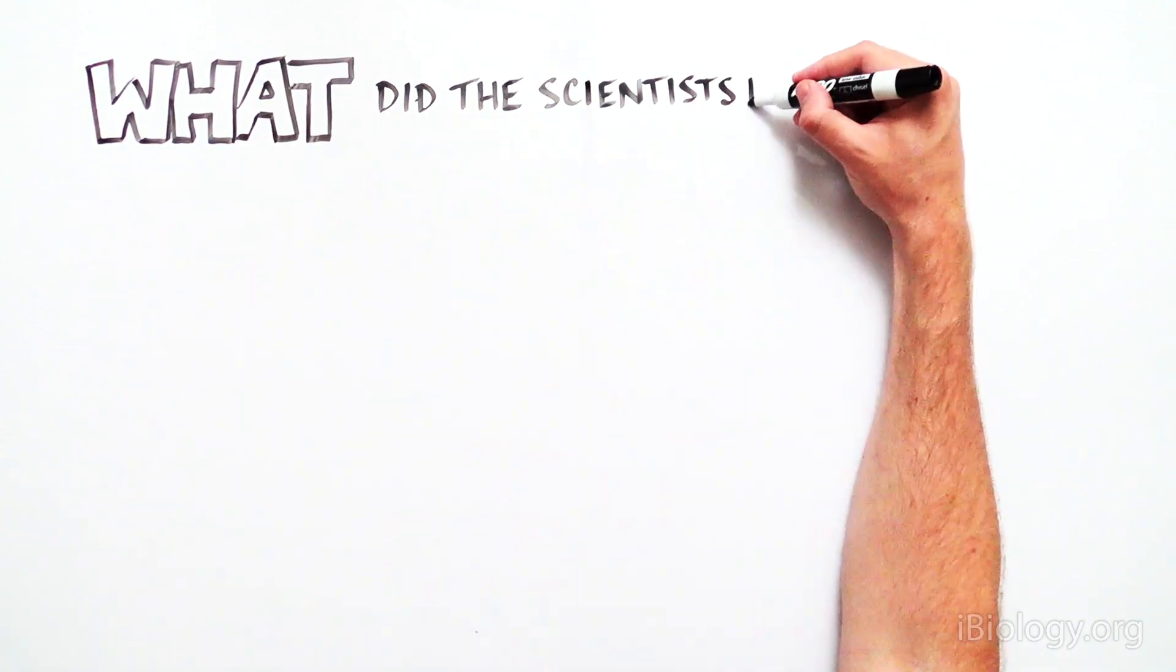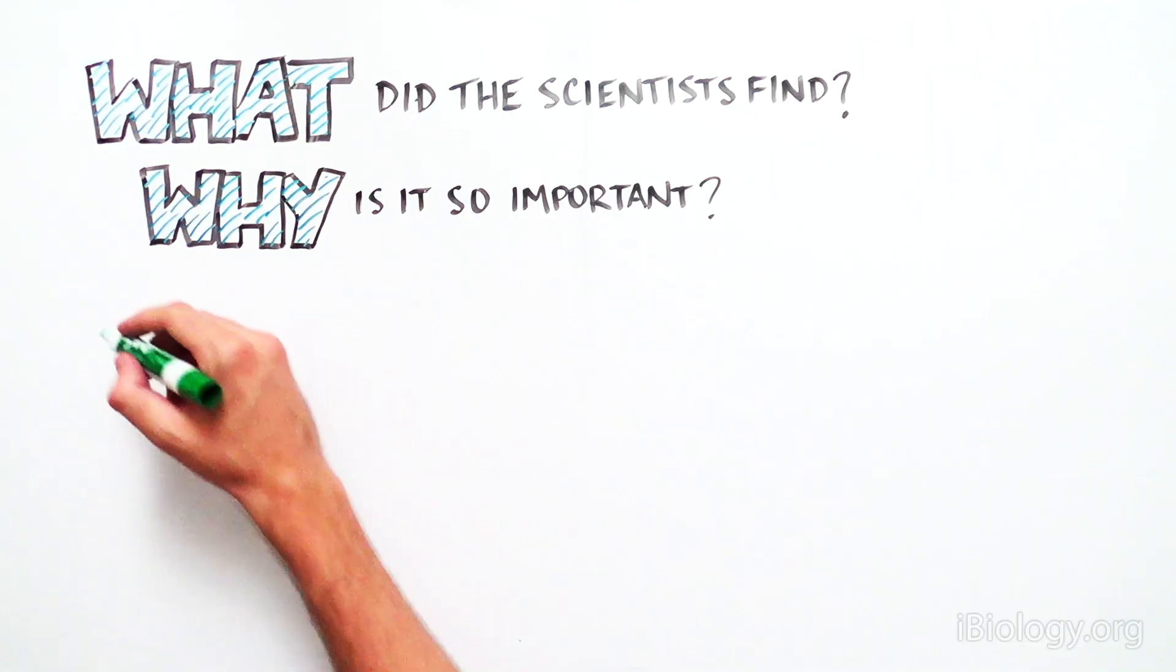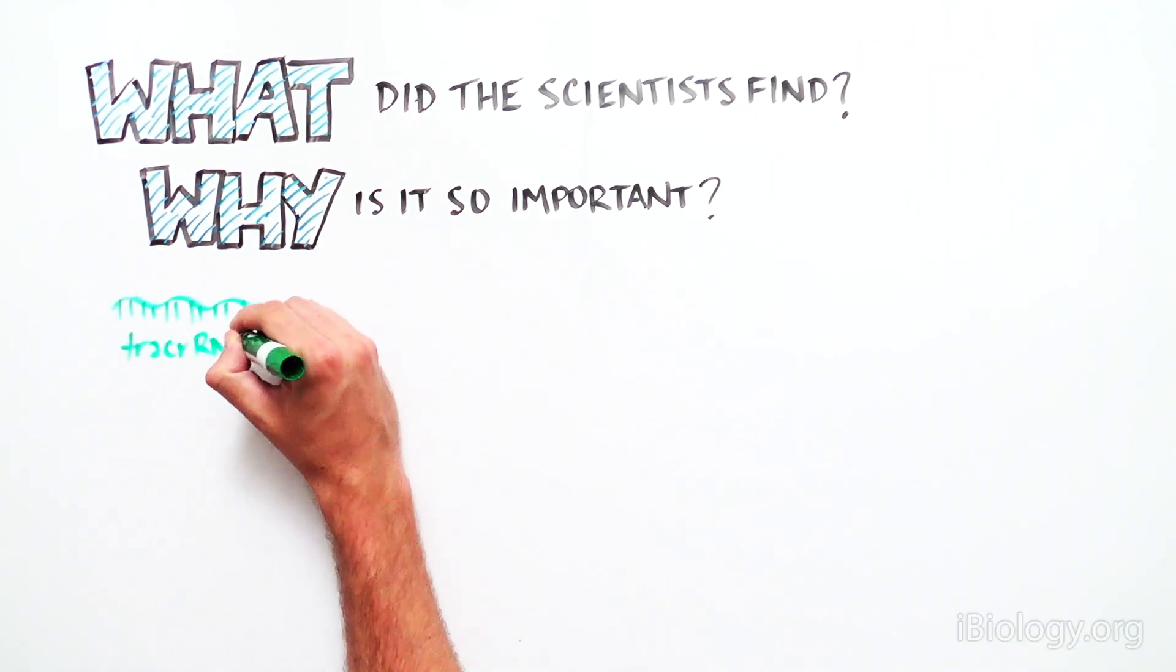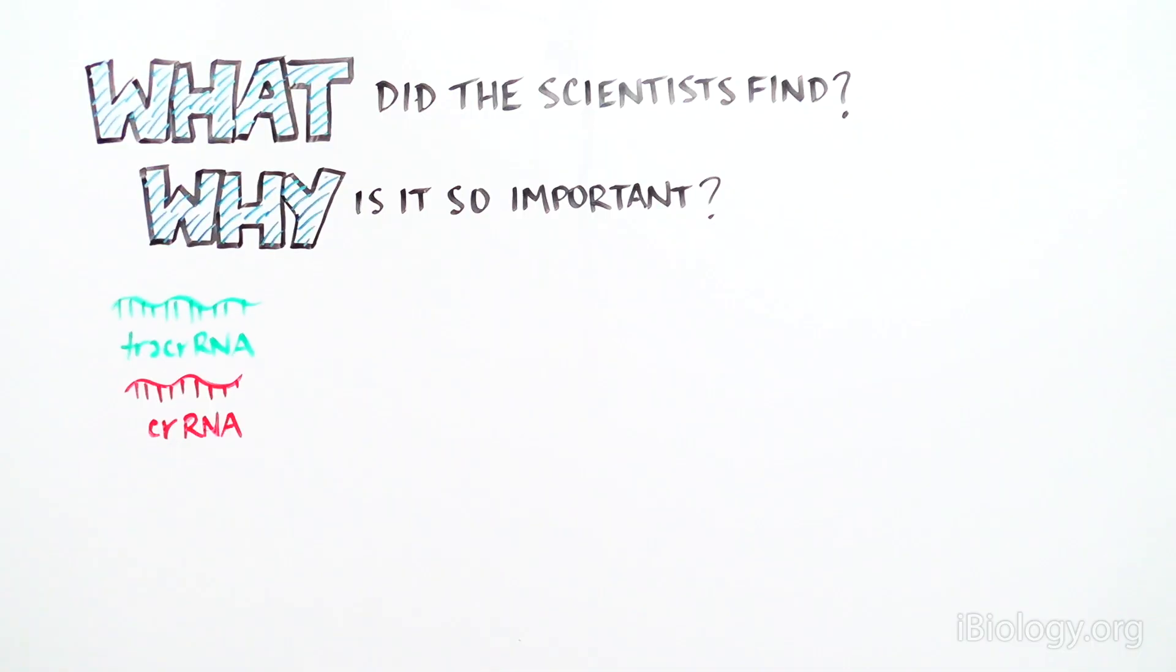So what exactly did these scientists find, and why is it so important for future biomedical research? First, the scientists dissected how Cas9 and the two RNAs can cut DNA. They found that the two RNAs, CRRNA here in red and tracer RNA here in green,